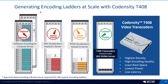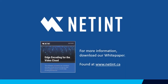To generate encoding ladders at scale, NetEnt Technologies is introducing the CoDensity T408 Video Transcoders. These very small compact modules are based on ASIC technology and built into a U2 form factor designed to plug into a special class of server called an NVMe server. The benefit is very high density and high encoding quality in the least rack space, the lowest power, while also delivering very low latency. If you would like to learn more about encoding generation at scale, please visit our website for the latest white papers and information.